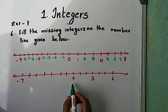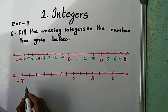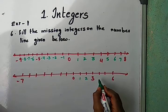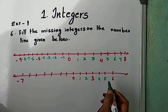They represented minus 7, 0, 3, and 6. Here, first write down the positive numbers: 1, 2, 3, 4, 5.